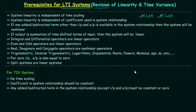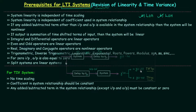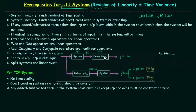Now we will move to time invariant and time variant systems. To determine if a system is time invariant or time variant, we first provide a delay T₀ to the output and record the delayed output. Then in step two, instead of delaying the output, we provide the same delay to the input, giving x(t−T₀), feed it to the same system, and compare the resulting output. If both outputs are the same, it is time invariant; otherwise it is time variant.